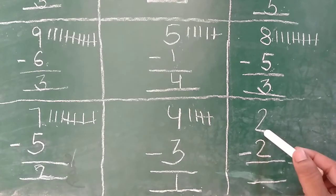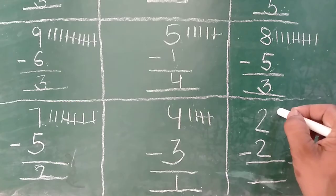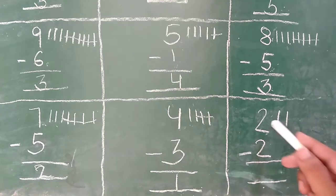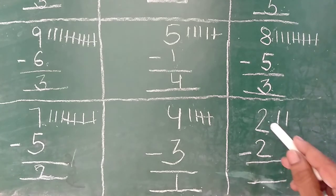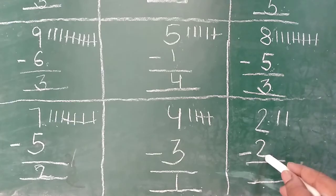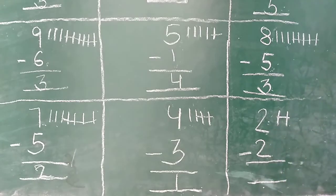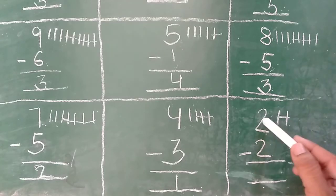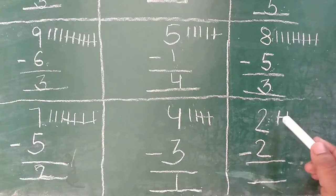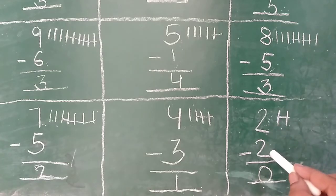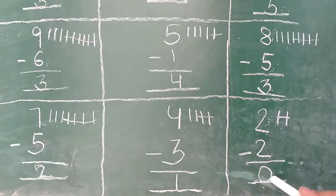Acha, ye kitna hai? Two. Very good. Toh kya karenge? Two lines draw karenge. Ab niche kitna hai? Two. Upar bhi two, niche bhi two. Toh two lines draw ki. Ab niche kitna hai? Two. Toh two lines cut karenge. One, two. Sari lines cut gai. Kya bacha? Kuch nahi bacha. Ek bhi line remaining nahi hai hamare paas. Toh two mein se two cut ho gaya, toh kitna bach gaya? Zero.